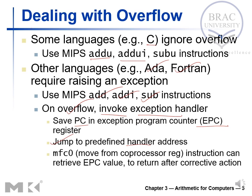After the exception is handled, the address stored in the EPC register is transferred back into a register inside the register file — for example, register T0. Now T0 holds the memory address of the instruction that originally generated the overflow. That address is then transferred back to the program counter, and the program re-executes the instruction that initially generated the overflow.